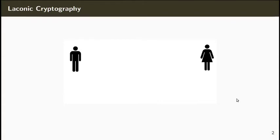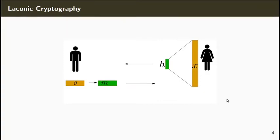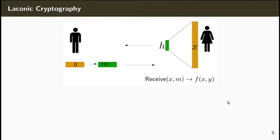In this work, we study the framework of laconic cryptography, which is a special case of two-party secure computation. Here the first party, or the receiver, has a long input X. It first hashes the input into a small hash H. Then the sender computes a message M depending on his input Y and the hash H. Finally, given X and M, the receiver can compute F. In terms of efficiency, we require that the communication complexity of the protocol doesn't depend on the size of the receiver's input X.